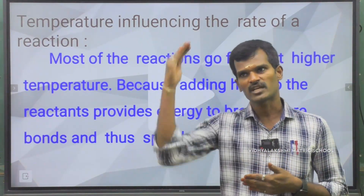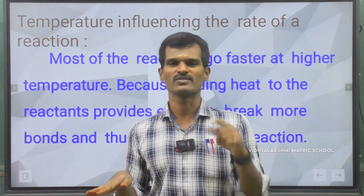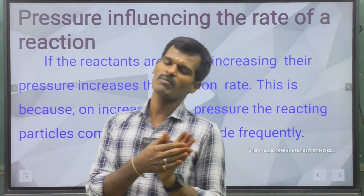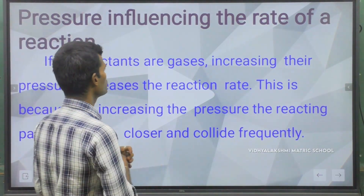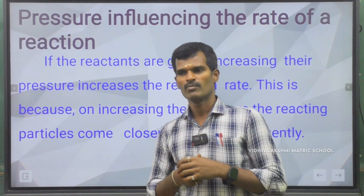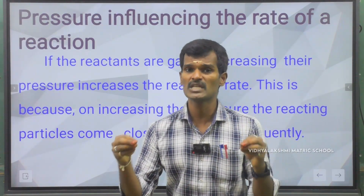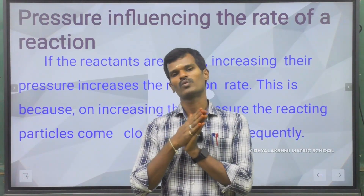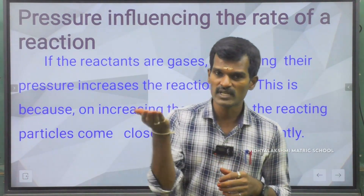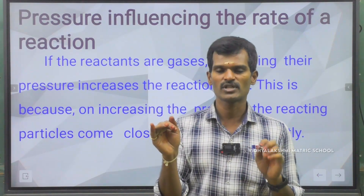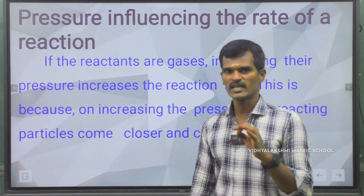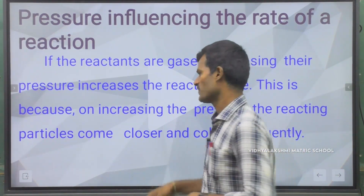The rate of chemical reaction is directly proportional to temperature. The next factor is pressure. Pressure is not applicable to solid and liquid particles — it is only applicable to gaseous components, because solid and liquid particles cannot be greatly affected by pressure. Increasing the pressure increases the rate of reaction for gases; decreasing the pressure decreases the rate of the reaction.